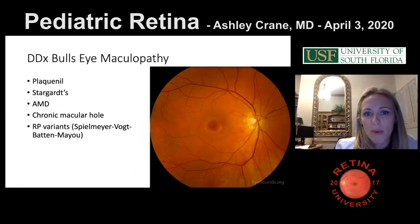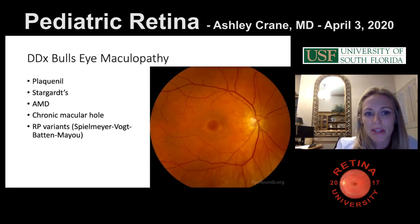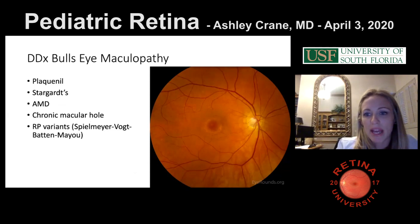Always remember the differential diagnosis of bullseye maculopathy. We just went through some of them, including Stargardt's. Remember: Plaquenil toxicity, Stargardt's, AMD, chronic macular hole, and some RP variants can all present with bullseye maculopathy.